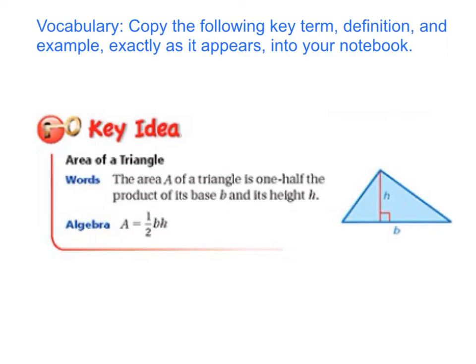The area, capital A, of a triangle is one-half the product of its base, B, and its height, H. We write that in algebra as: capital A equals one-half B times H.